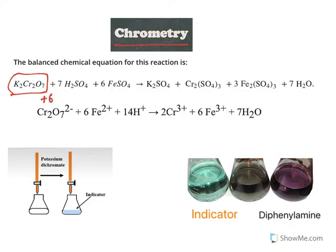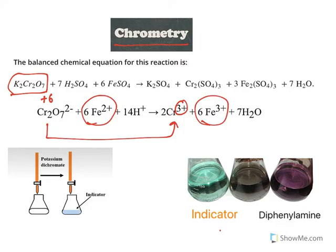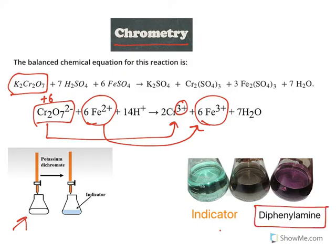The next type is dichromatry or chromatry, which uses potassium dichromate. In this reaction, chromium's oxidation state changes from +6 to +3, meaning it gains electrons and gets reduced, oxidizing iron from +2 to +3 — a similar mechanism to permanganometry. They react stoichiometrically. However, here you need to use an external indicator like diphenylamine, which initially gives a green color that converts to a purple color at the end of the titration, indicating the endpoint.